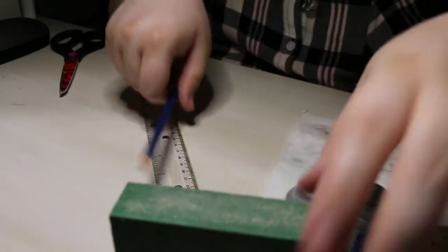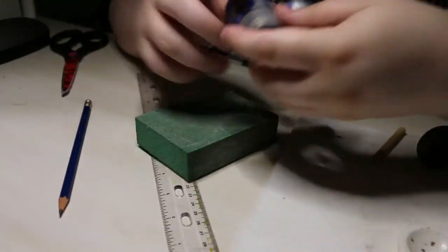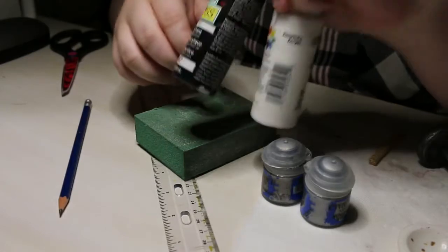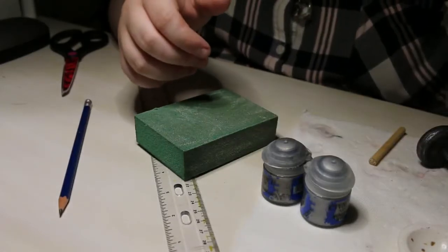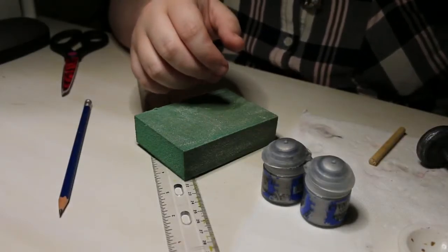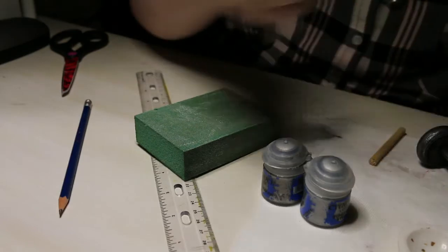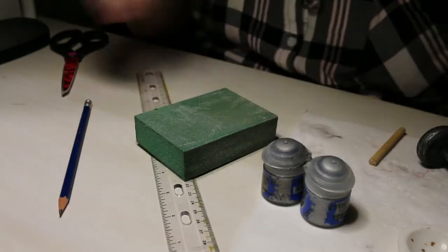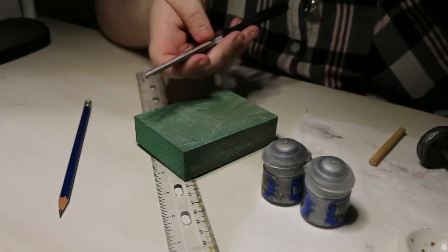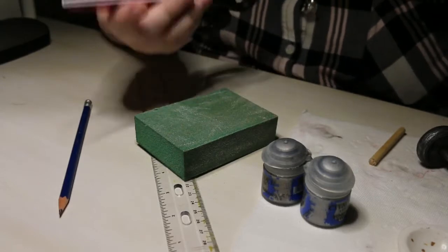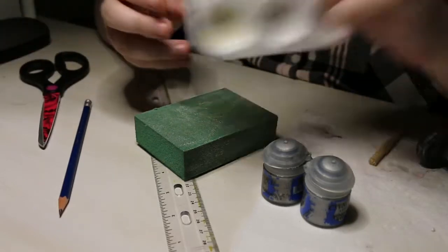You'll need a ruler, a pencil, a sanding block, some metallic silver paint, white and black paint or gray paint—I don't have gray so I'm making my own color—a random assortment of paintbrushes, scissors or something to cut the wooden dowel with, and a little paint mixer.